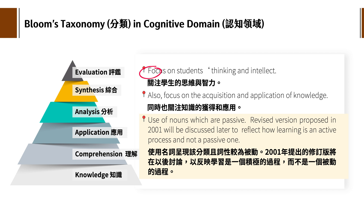也就是Thinking和intellect，所以我们常叫做intelligent的另外一个表现方式。同时有关注知识的获得跟应用，就是Focus on acquisition跟application。第三点你可以看到，使用名词呈现该分类。